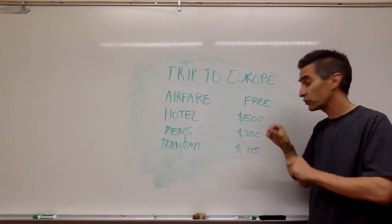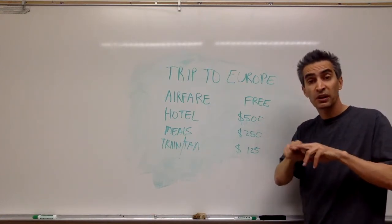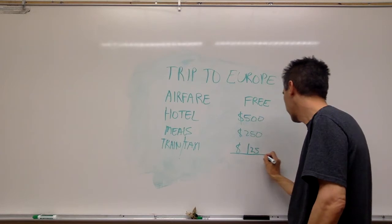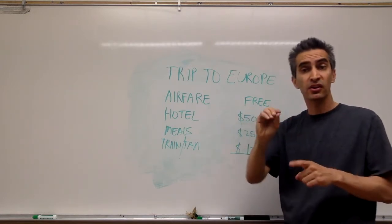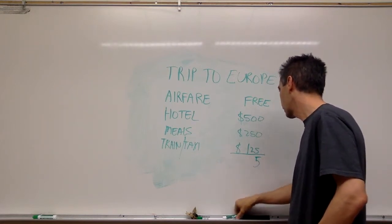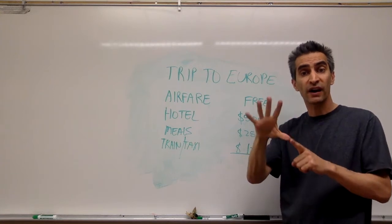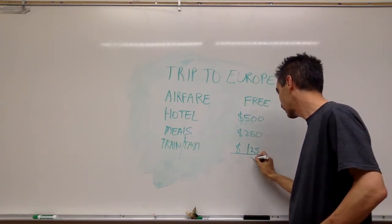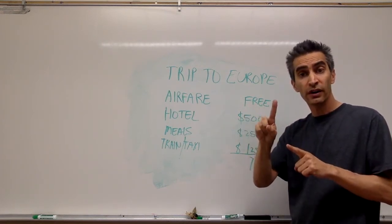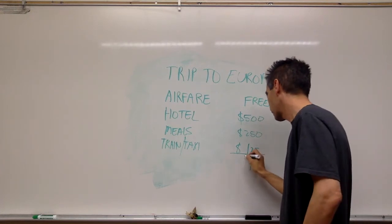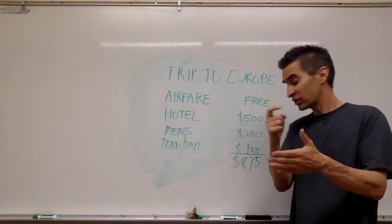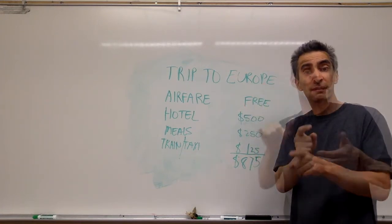So let's see. The hotel, the meals, the train, the taxi — what's all that going to cost? Zero and zero and five equals five. And zero and five and two equals seven. And five and two and one makes eight. So the cost for both of you is going to be $875, right?